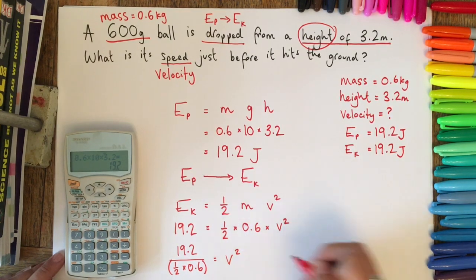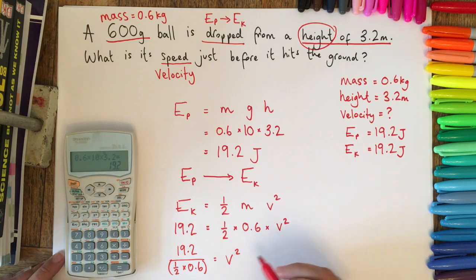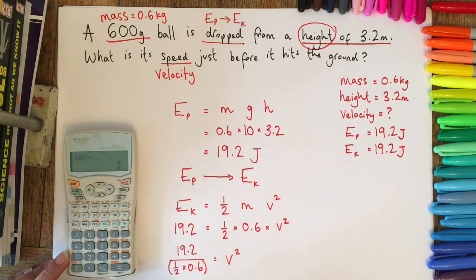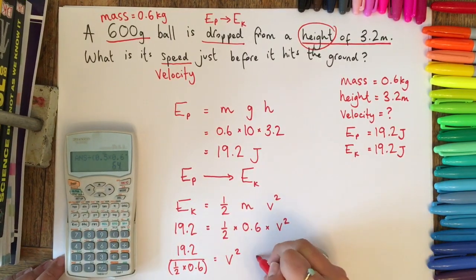You need to make sure that you've got your brackets in here. So if we do this on the calculator, we've still got 19.2, so we're going to do divided by 0.5 times 0.6, and this is going to give us 64.